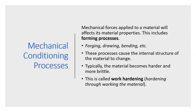Mechanical conditioning processes are applied to a material and affect its material properties. These include forming processes such as forging, drawing, and bending. All of these are mechanical conditioning processes — in addition to shaping the metal, they cause the internal structure to change. Typically the material becomes harder and more brittle. This process is called work hardening — hardening through working the material.